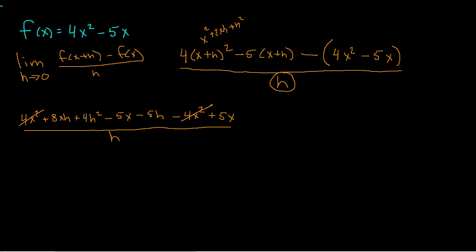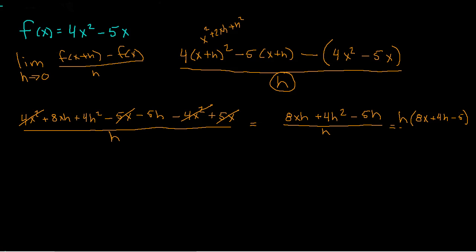Now I've got to get that h to cancel, but to do that I need a factor. So: 4x squared and negative 4x squared cancel — dust in the wind. Negative 5x and positive 5x cancel. After all that dust settles, I'm left with 8xh plus 4h squared minus 5h, all divided by h. I still can't cancel until I have a factor, so let's factor out an h on top. I'm left with 8x plus 4h minus 5, all divided by h.